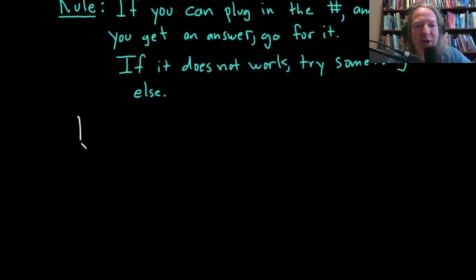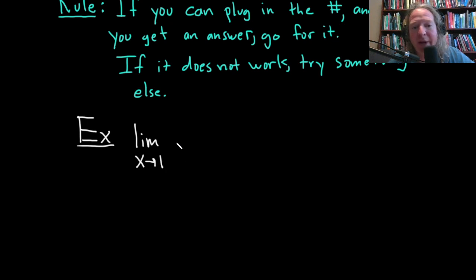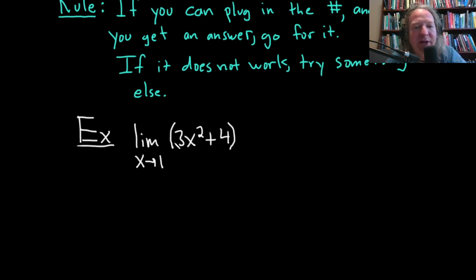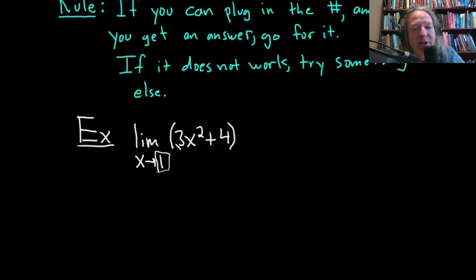Let's start with an example. Say we have the limit as x approaches one of 3x squared plus four. So we're trying to find the limit of 3x² + 4 as x approaches 1. Our rule says if we can plug in the number — in this case the one — into this polynomial and we get an answer, go for it.